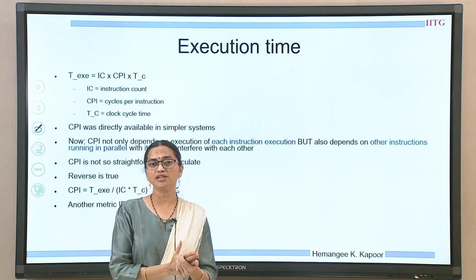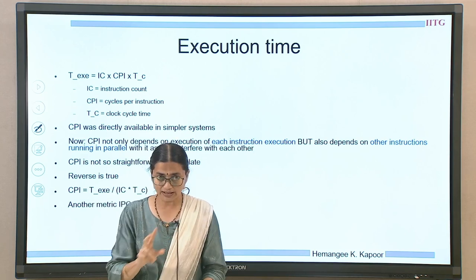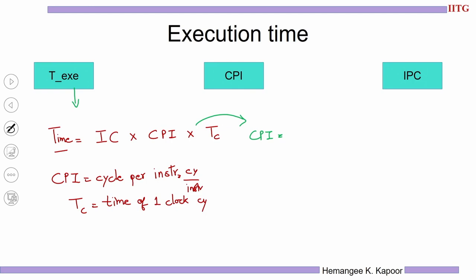We can use the previous formula to find CPI: run a program, know the number of instructions, and know TC (the clock period). With these three pieces of information we can easily derive CPI as: CPI = TEXE / (IC × TC). Another interesting metric is IPC — instructions per cycle — which is the reciprocal of CPI, i.e., 1/CPI. CPI should be as low as possible, and IPC should be as high as possible for a better performing system.